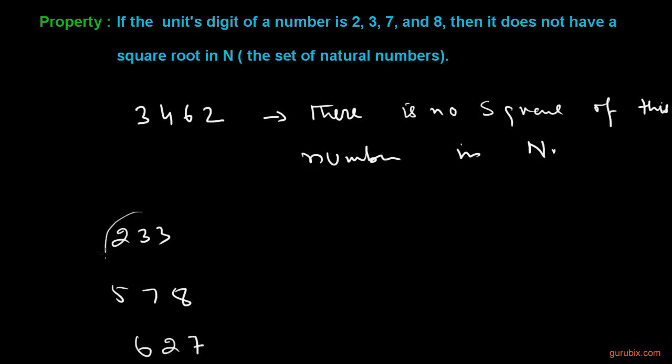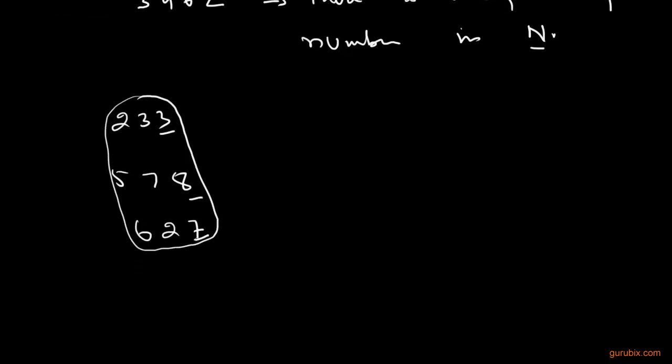These numbers do not have their square root in the set of natural numbers because the unit digits of these numbers are 3, 8, and 7. So we cannot find the square root of these numbers in the set of natural numbers. Thank you.